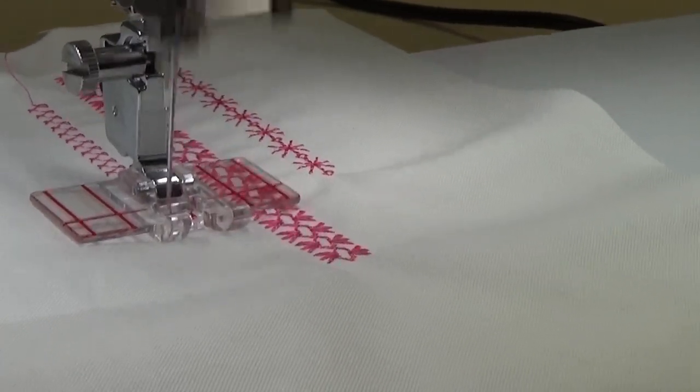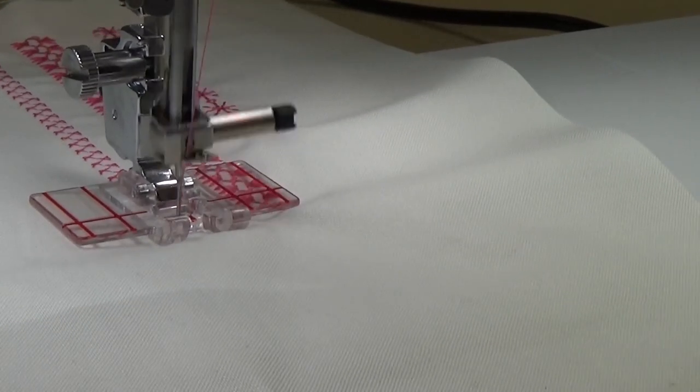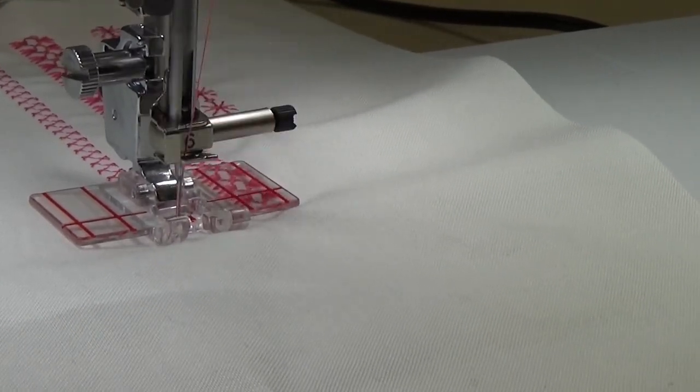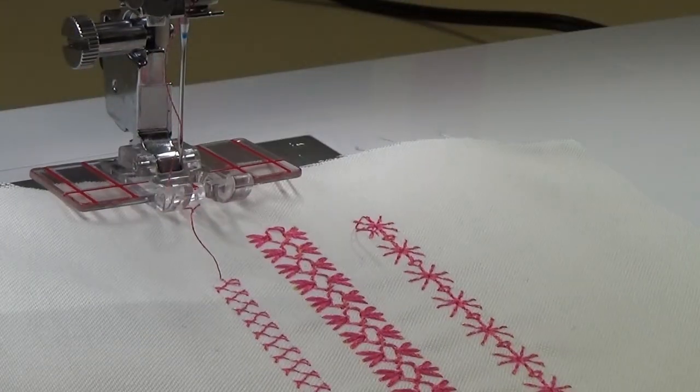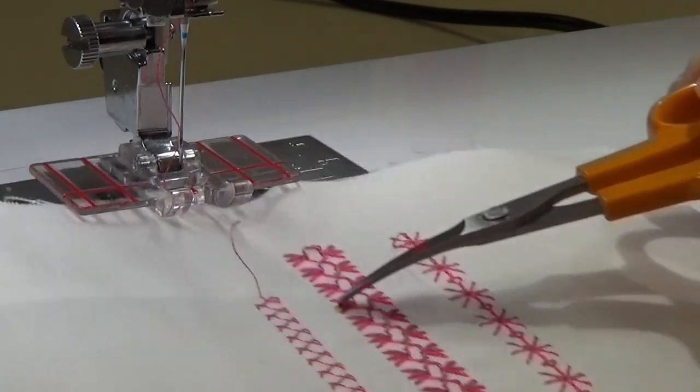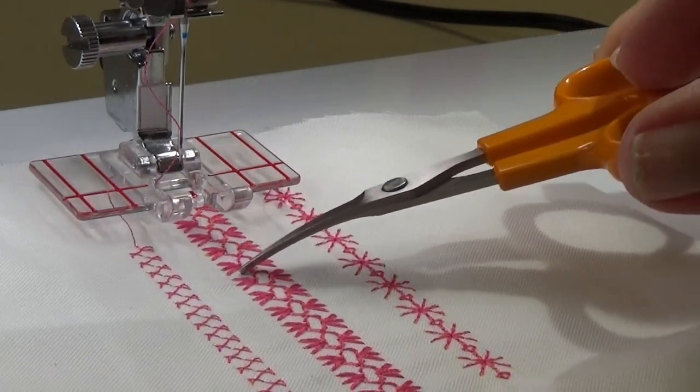So you only need to put the line for one row of stitching. And after that, you can just use it as your guide for all your other ones. So here you go and you can see that now, since the first one went a little crooked, they're all going to go crooked. But I can decide where I want it.